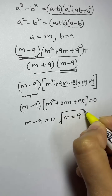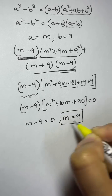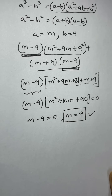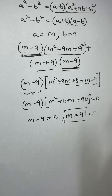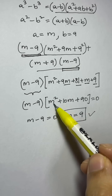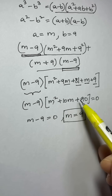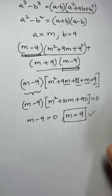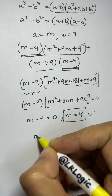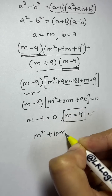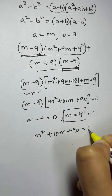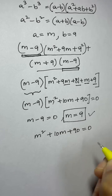Since this is a cubic equation, we have two more solutions. The remaining quadratic factor is m squared plus 10m plus 90 equals zero. Let's find those other two solutions.